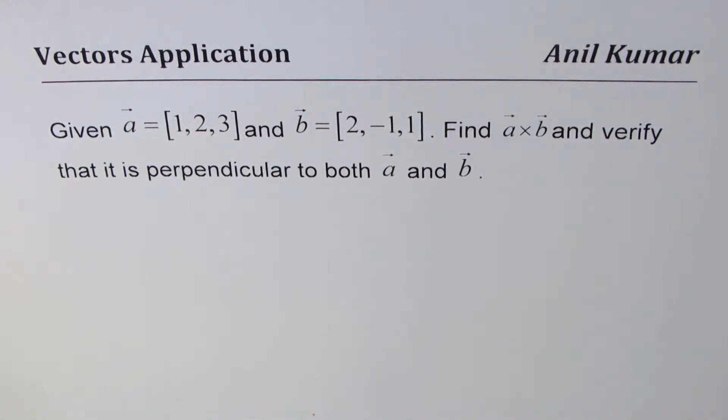The question here is: given vector a equals [1,2,3] and vector b equals [2,-1,1], find a×b and verify that it is perpendicular to both a and b. So that's the very basic question on cross product.